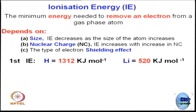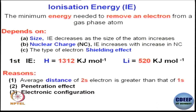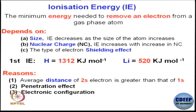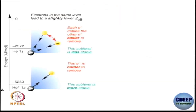For example, the first ionization energy for hydrogen is 1312 kJ/mol. For lithium (1s² 2s¹), removing the 1s electron costs 1312 kJ/mol, while removing the 2s electron costs only 520 kJ/mol. So 1s electron removal costs much more than 2s electron removal. This is because 1s is smaller in size and closer to the nucleus, while 2s is bigger. The distance of the 2s electron from the nucleus is greater than that of the 1s electron — penetration effects must be considered.